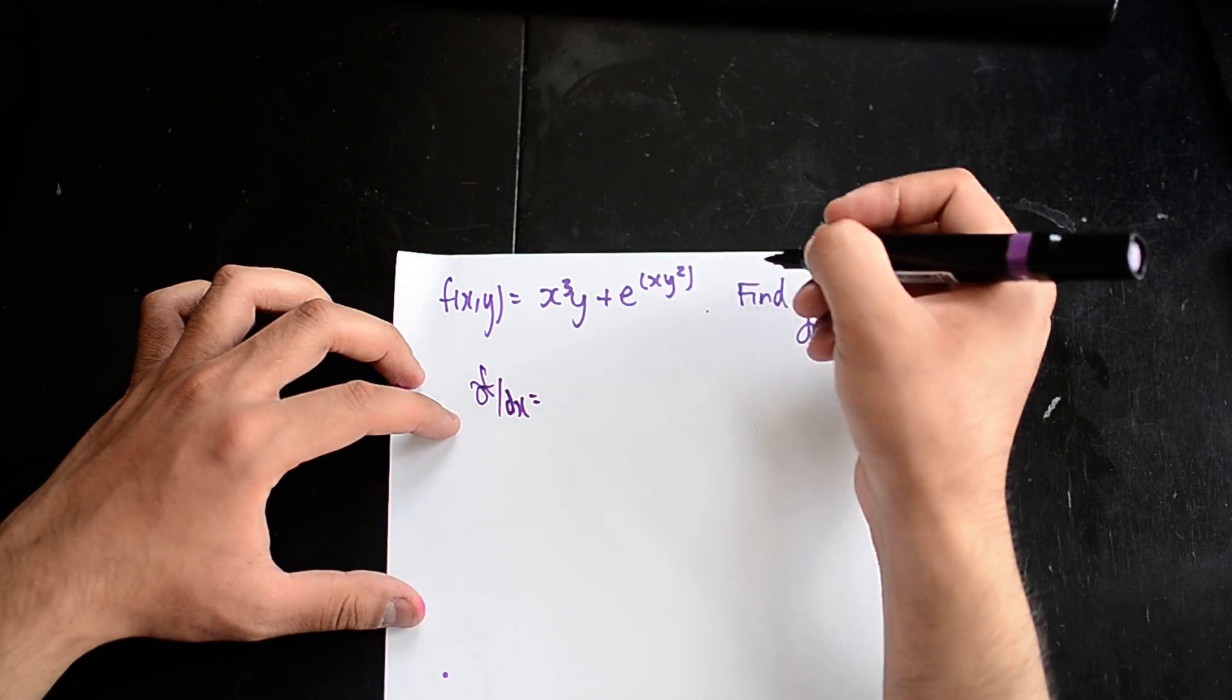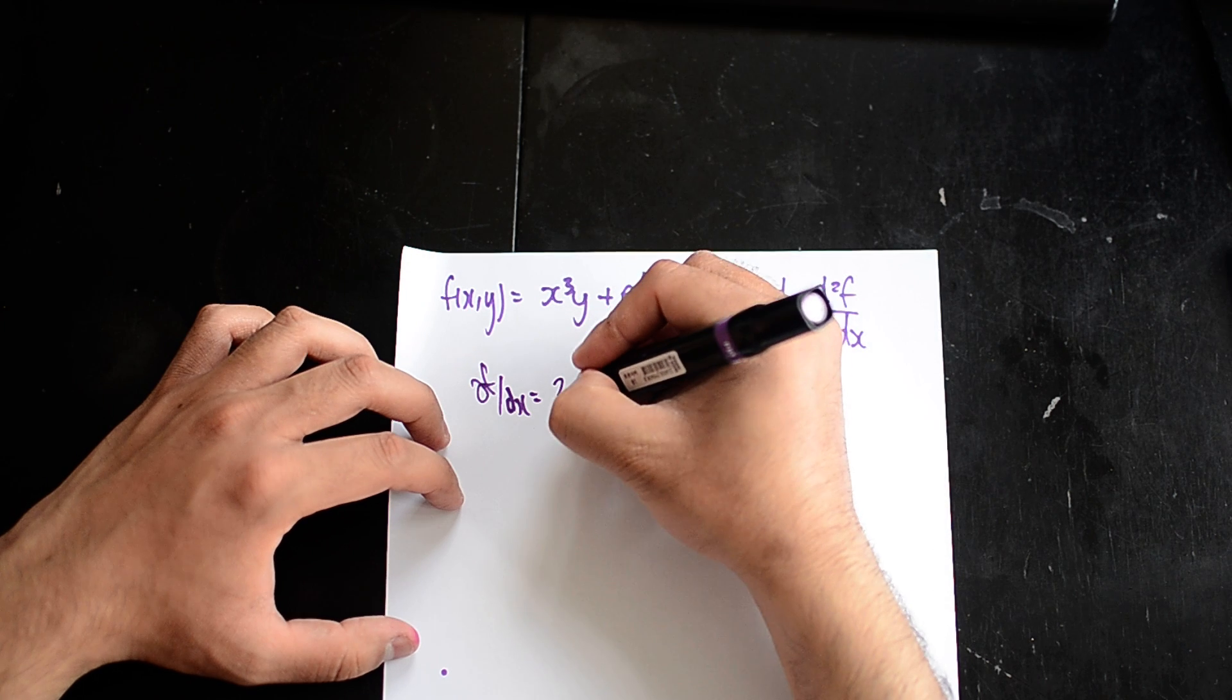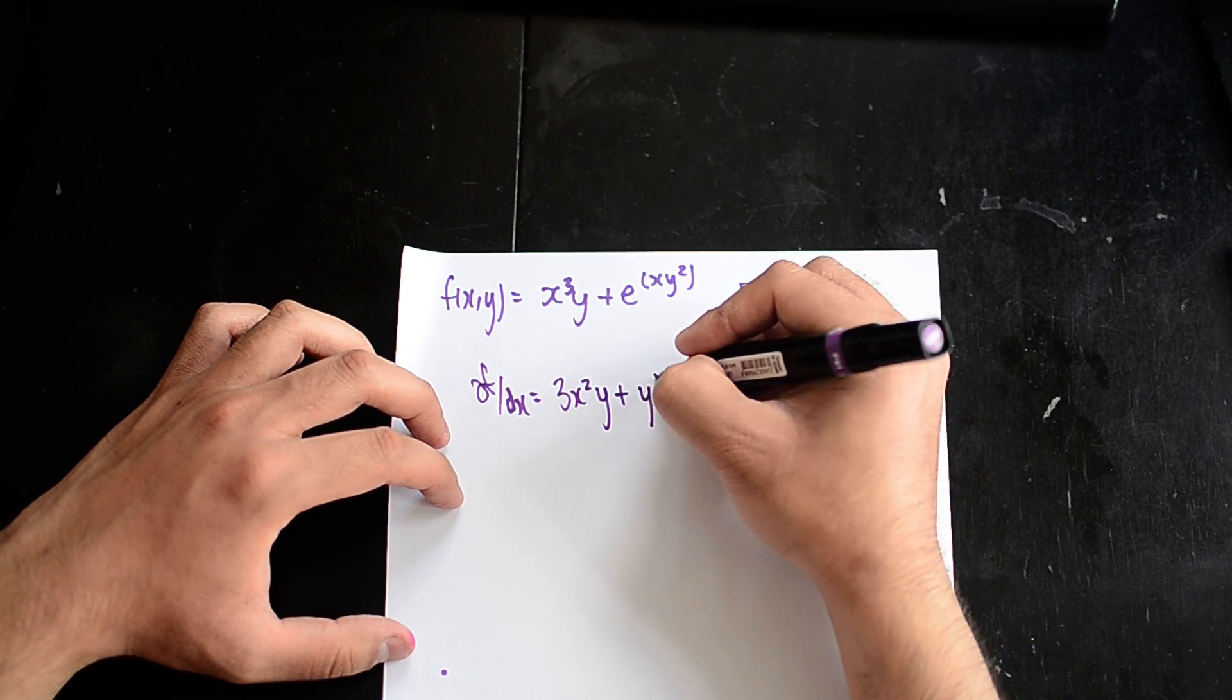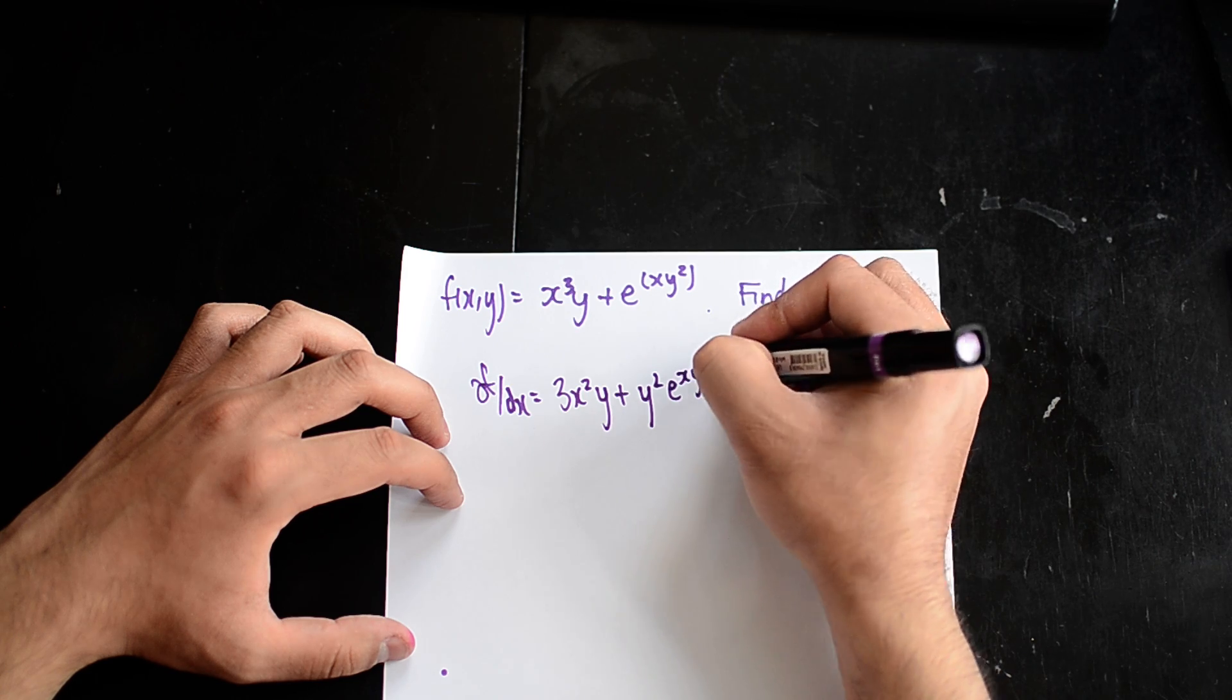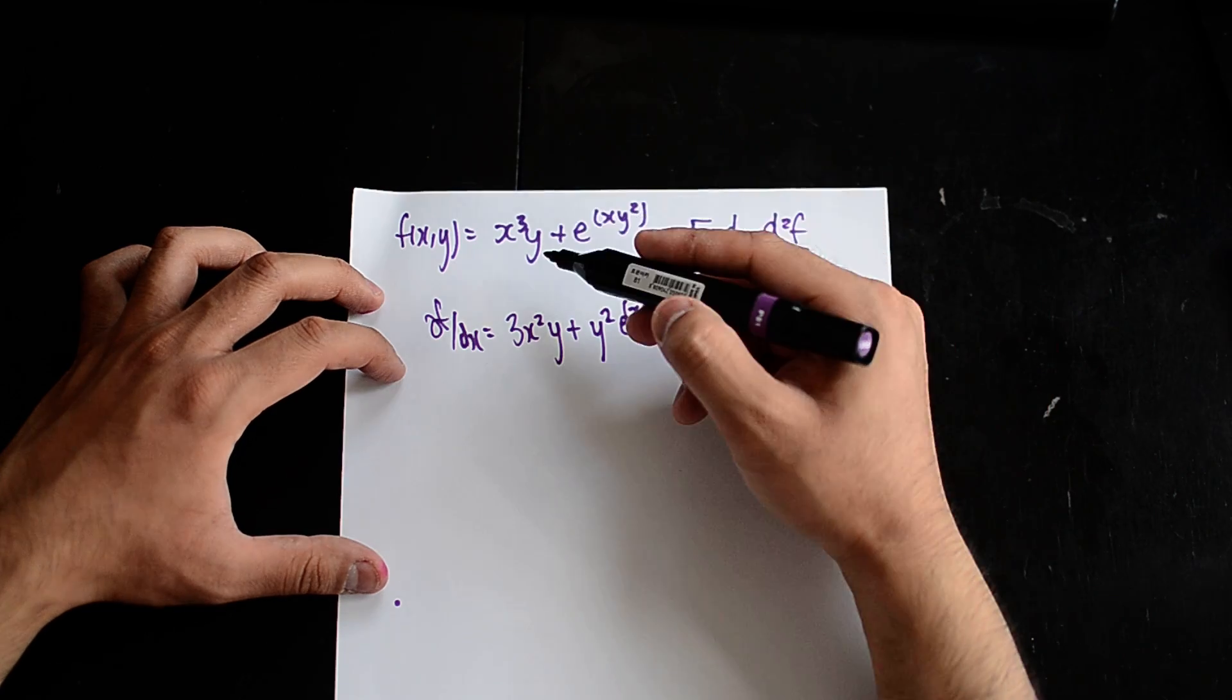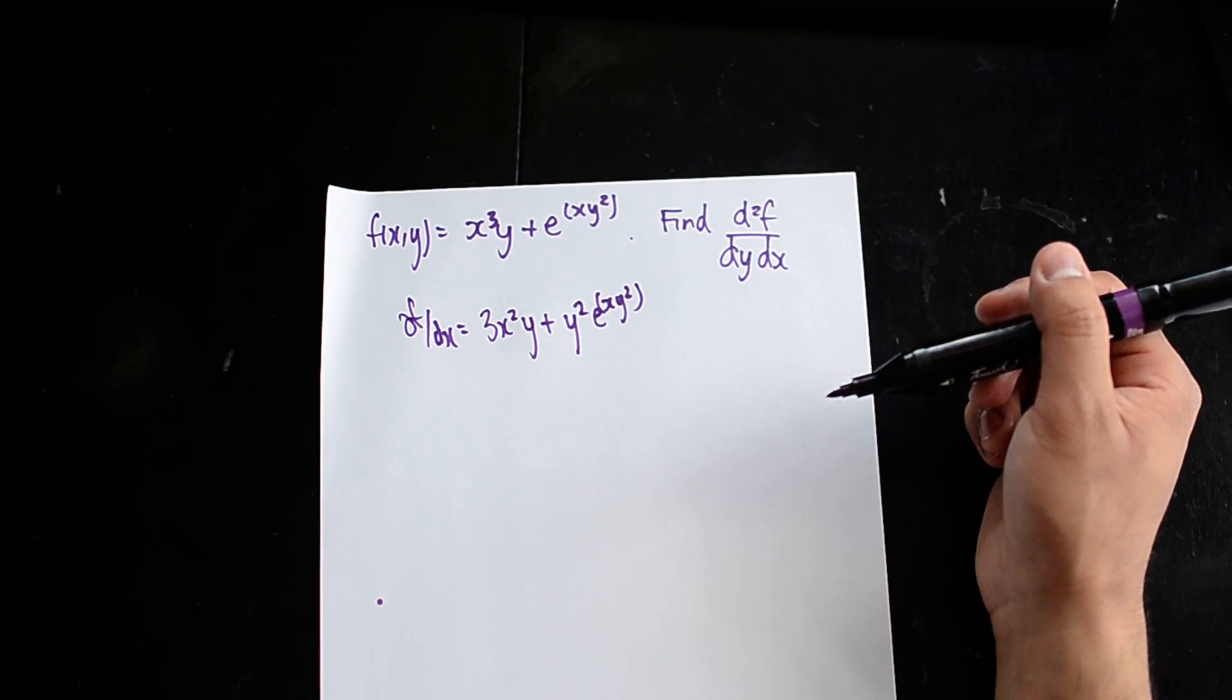Here I'm holding the y term constant, so I'm going to get 3x²y plus y²e^(xy²). This is what I got in the previous video. It's quite straightforward - I've held the y terms constant and I've got this as my answer.